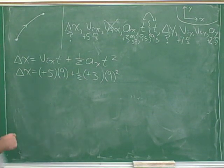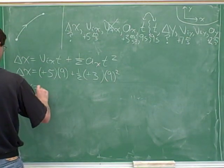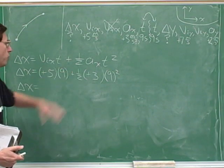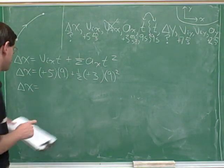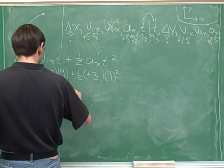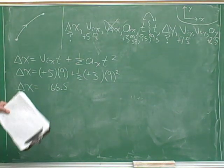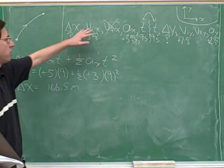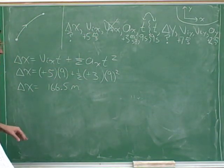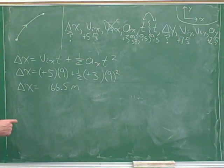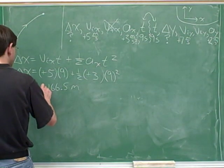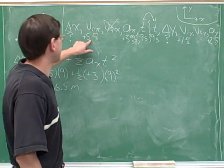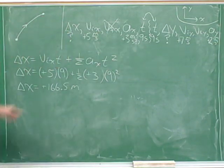Now use your calculator to work this out — you can do the whole calculation in one step on a scientific calculator. The result is 166.5. That's not an acceptable answer yet; we need to write the units (meters) and indicate the sign explicitly: +166.5 meters. Check whether this makes sense — yes, we started moving to the right and were speeding up in that direction, so a positive x displacement is expected.